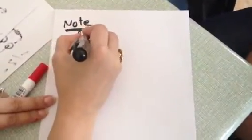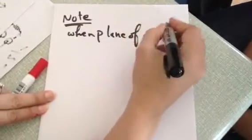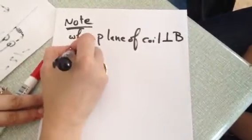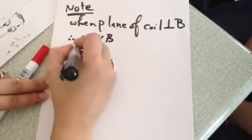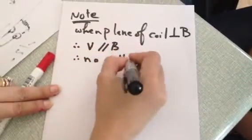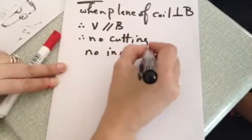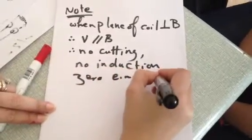Okay, so note: when plane of coil perpendicular over B, so V parallel to B, then no cutting, no induction, zero EMF, and current.